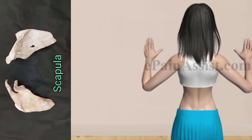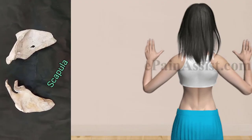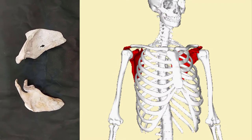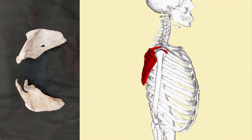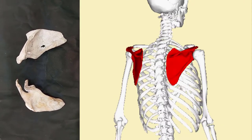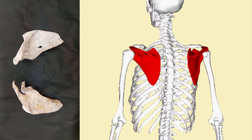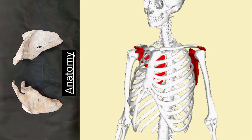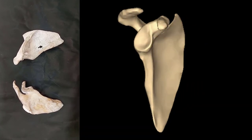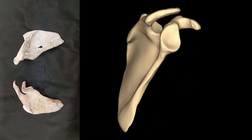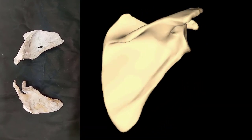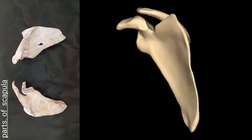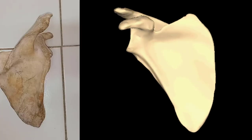Hello everyone, today in this video we will discuss the scapula bone. The scapula is a flat triangular shaped bone, also known in anatomy as the shoulder bone, shoulder blade bone, or wing bone.